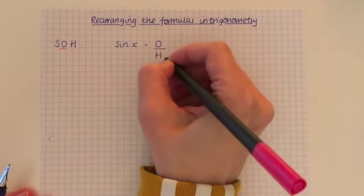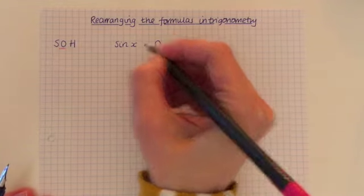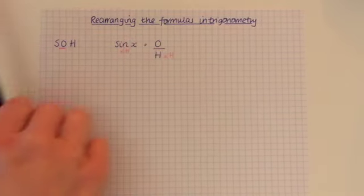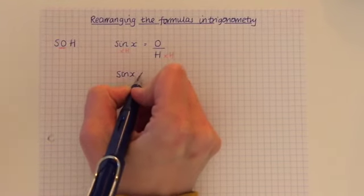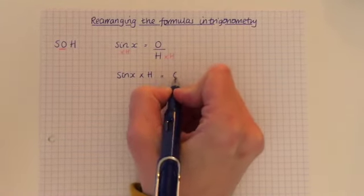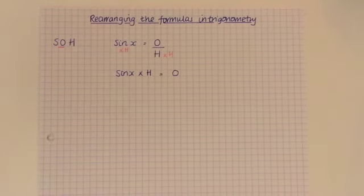So basically, I'm going to multiply each side by H. So that's the first step. So sine X times H, this is what we did last time, equals O.